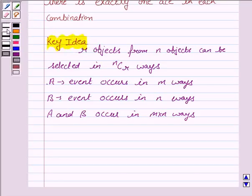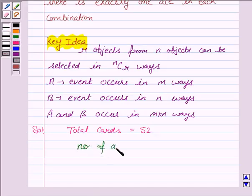Let us now move on to the solution. The total cards are 52. The number of aces is equal to 4, and cards to be selected are five in number. Out of these five cards, one must be ace.